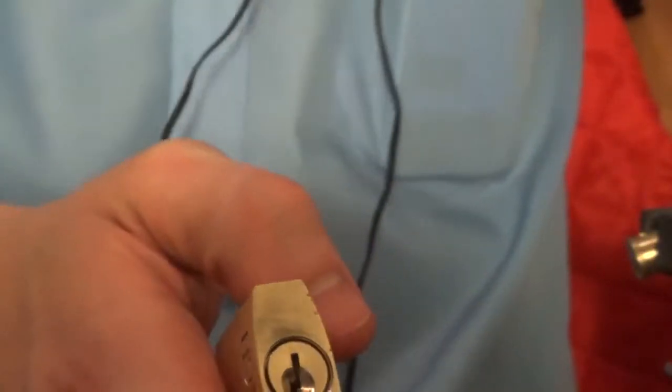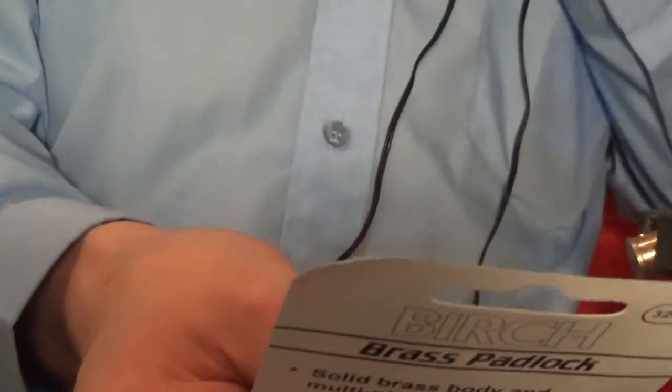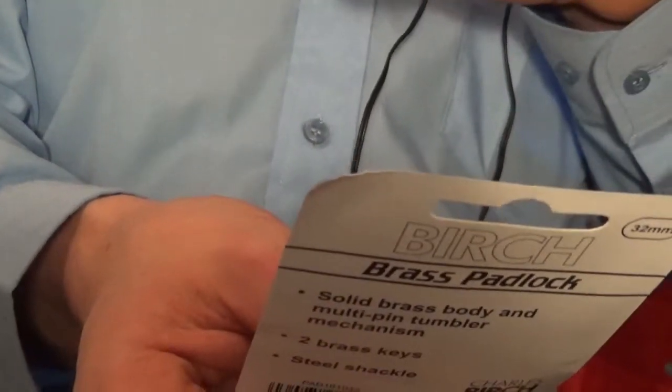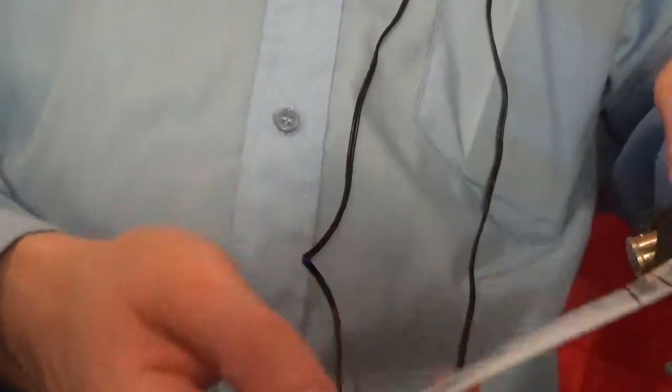And firstly, we'll just show you something. We shall try to pick it first. So let's see what ways we can pick this. Just see it's got solid brass bodies, two brass keys, steel shackles, and Charles Birch.